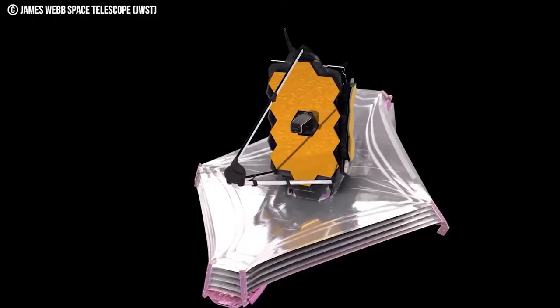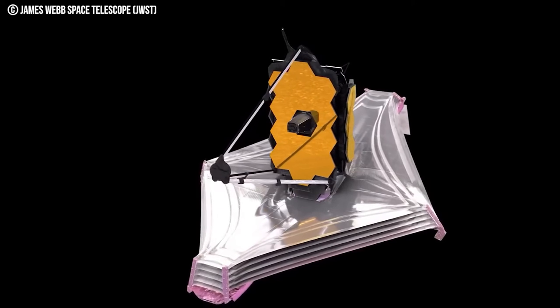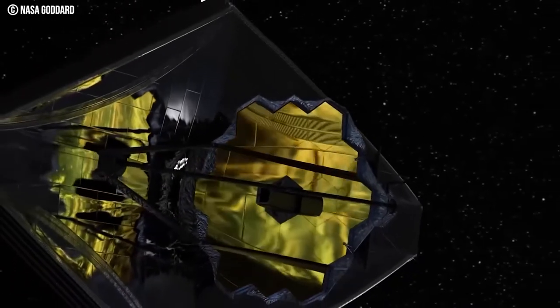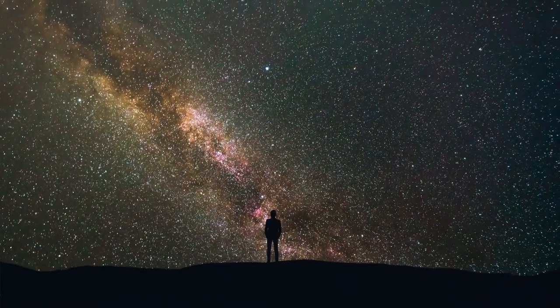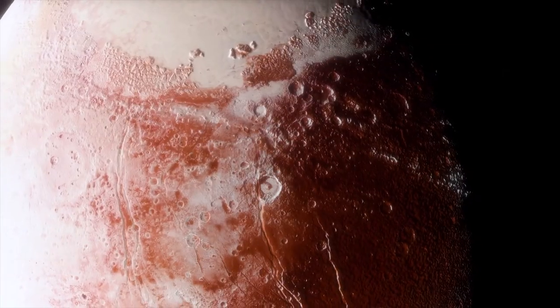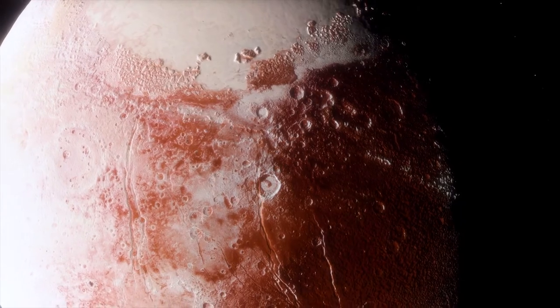First, there's the near-infrared camera NIRCAM, which looks at the shortest wavelengths of infrared light closest to visible light and will be used to study the universe's earliest stars and galaxies during their formation, as well as young stars in the Milky Way and distant Kuiper Belt objects near Pluto's orbit.